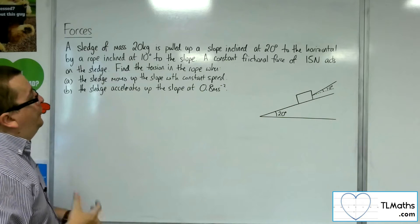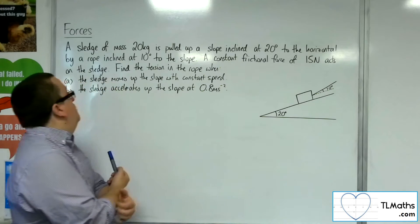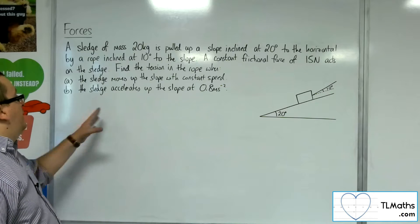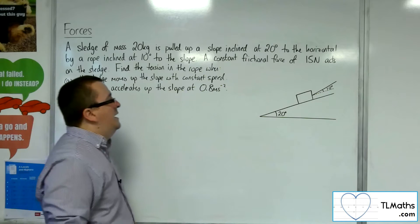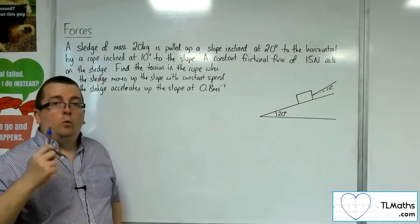A constant frictional force of 15 newtons acts on the sledge. Find the tension in the rope when the slope moves up the slope with constant speed and the sledge accelerates up the slope at 0.8 metres per second per second. Let's draw on what we know.